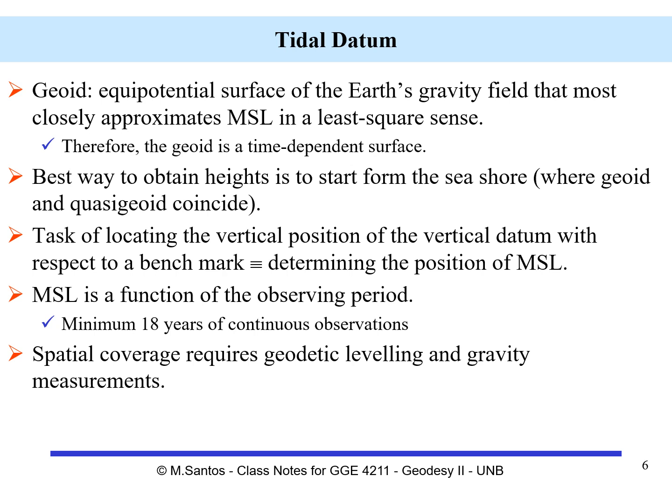We use as our vertical datum the geoid, which is a potential surface of the Earth's gravity field that most closely approximates mean sea level in a least-squares sense. Therefore, because it approximates mean sea level, the geoid is a time-dependent surface. The best way to obtain heights is to start from the sea, from the seashore, where the geoid and quasi-geoid coincide. The task of locating the vertical position of the vertical datum with respect to a benchmark is the determination of the position of mean sea level.